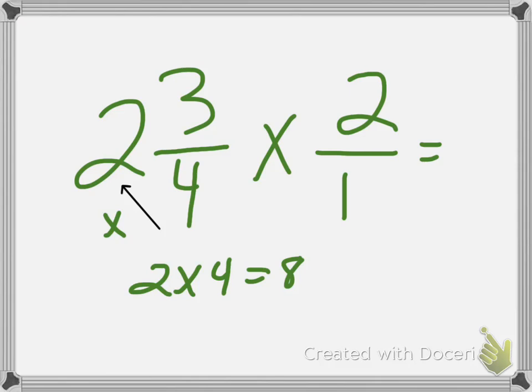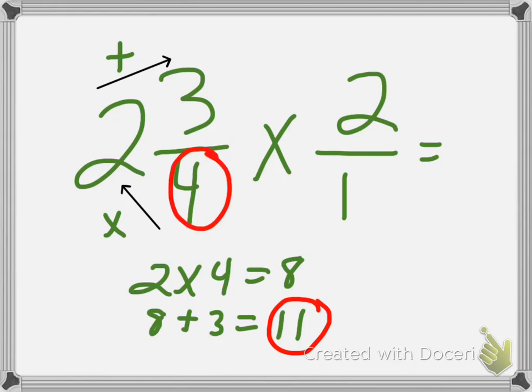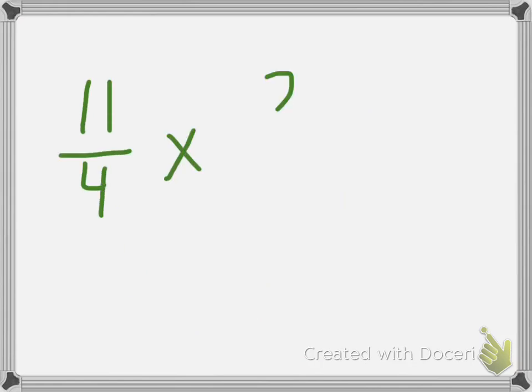The first thing we do is multiply the denominator of 4 by the whole number 2, and 2 times 4 equals 8. And we add that 8 to the numerator, and we get 11. 8 plus 3 equals 11. And then we keep that numerator, the denominator rather, of 4, and we have a new improper fraction, 11 fourths.